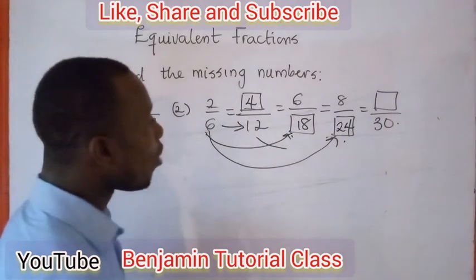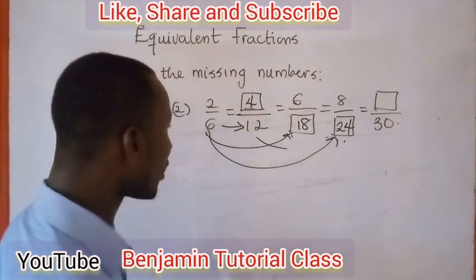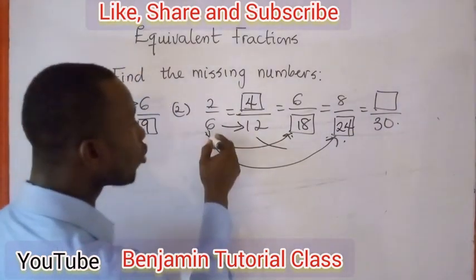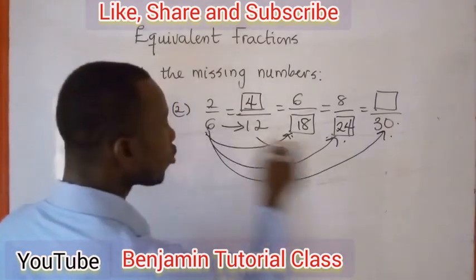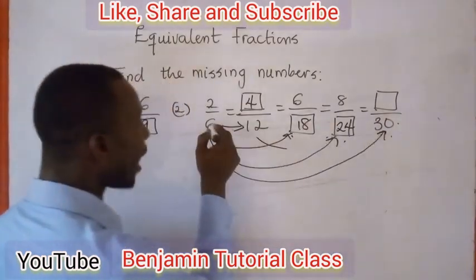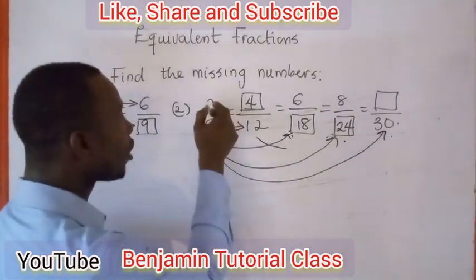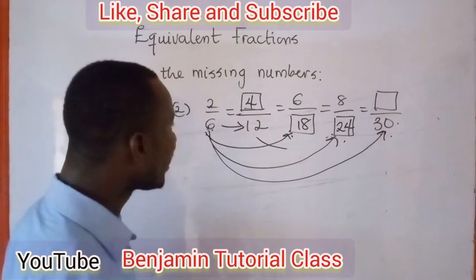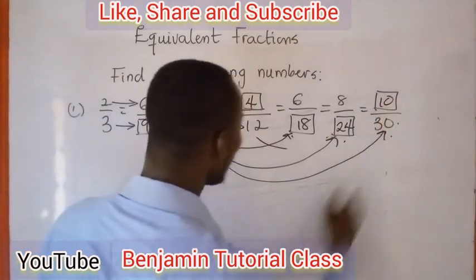For the final one, you link 30 to 6. Say 30 divided by 6, which gives 5. Multiply your result by 2: 5 multiplied by 2 gives 10. So the missing numerator is 10, giving us 10 over 30.